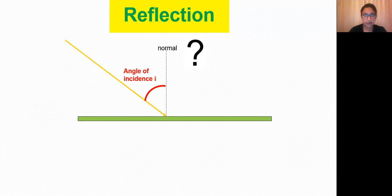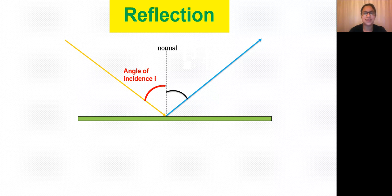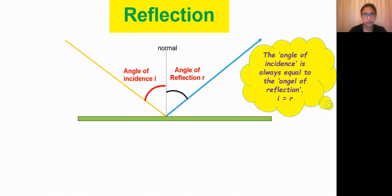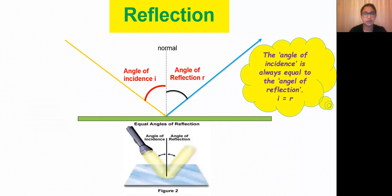The ray of light which gets reflected back also makes an angle with respect to the normal called the angle of reflection, represented by small letter r. Experiment shows that the angle of incidence is always equal to the angle of reflection — for example, if i is equal to 40 degrees, r will also be 40 degrees.